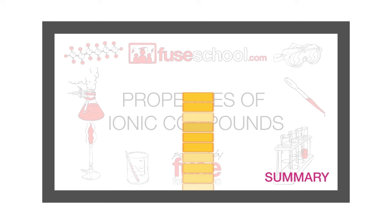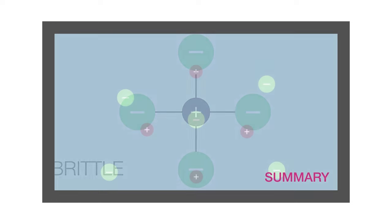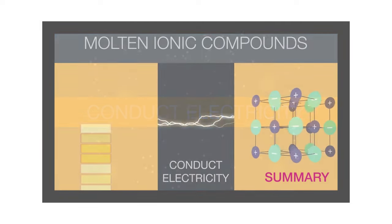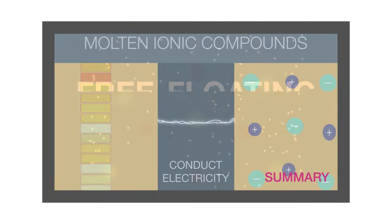In summary, ionic compounds have high melting points, are brittle, and can conduct electricity when dissolved in water or molten due to the presence of free-floating ions.